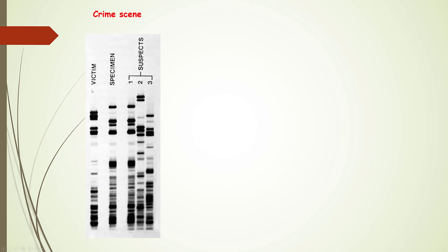Let's take one example of a crime scene to understand this technique properly. The banding pattern of the victim and the specimen from the crime scene are completely different. We also have DNA fingerprinting of 3 different suspects. It is clear that suspect 1 is the accused because the DNA profiling of suspect 1 and the specimen are the same.